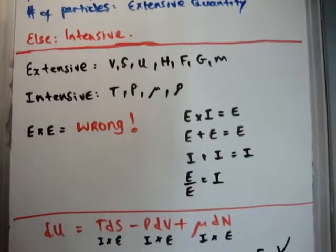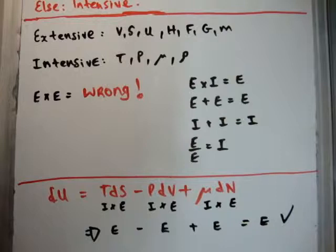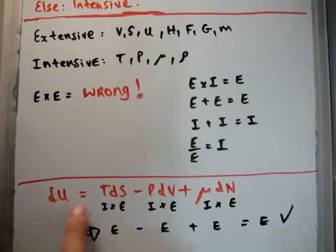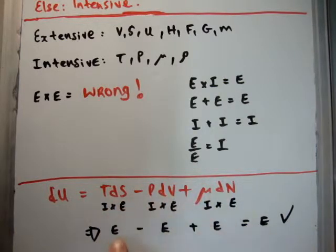So, let's just see if we can use an example. This is a thermodynamic identity. So, if you look, we have an intensive multiplied by an extensive, three times. Each giving us an extensive quantity. And if you add or subtract three extensive quantities, you get an extensive quantity.